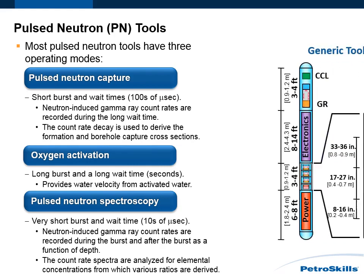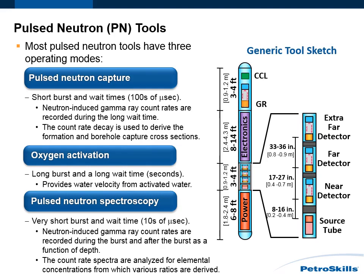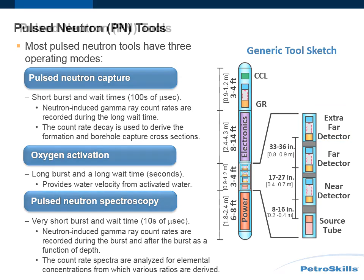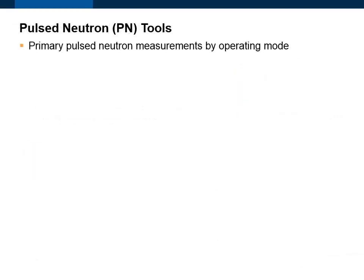The figure on the right shows the schematic of a generic Pulse Neutron tool. The actual number of detectors and their spacings and specific characteristics depend upon the service company making the tool. The primary Pulse Neutron measurements by operating mode are listed as follows.